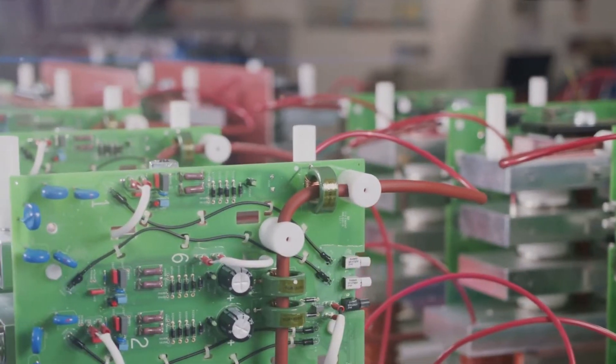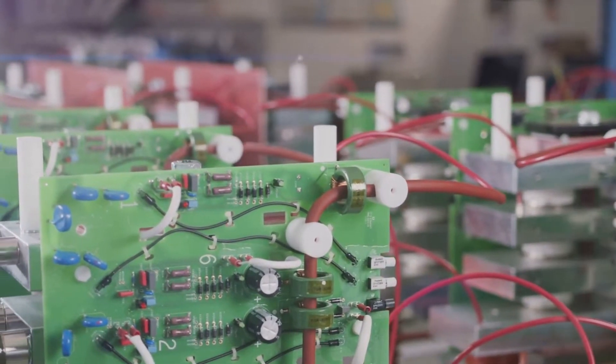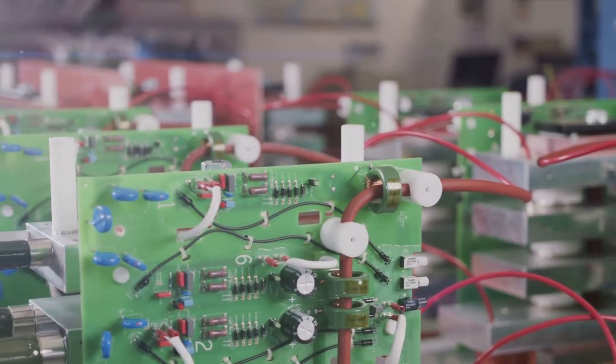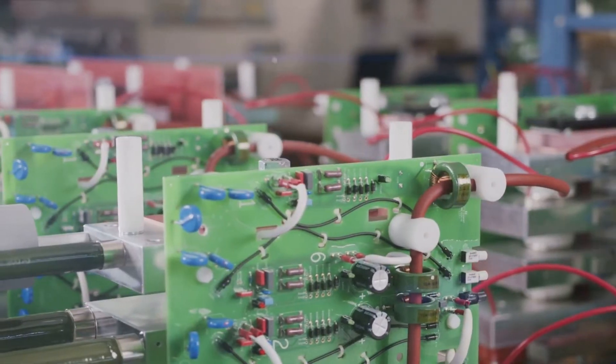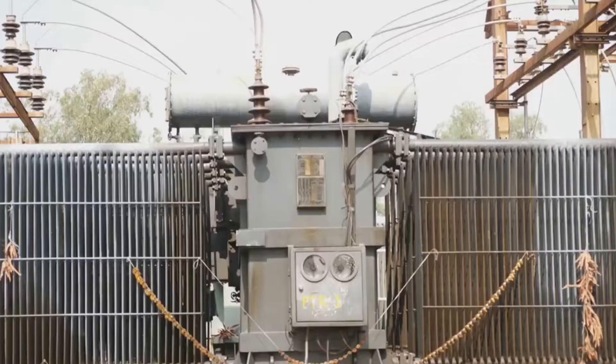Capacitive reactive power is generated when the current leads the voltage. This generally happens in components like capacitors. It's like a reservoir storing power, ready to smooth out any fluctuations in the supply.